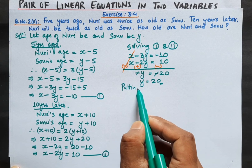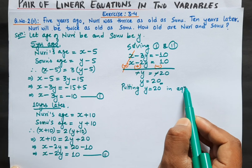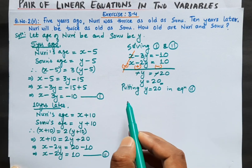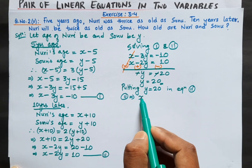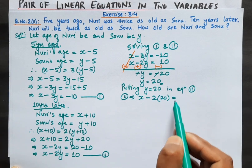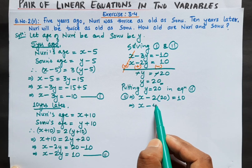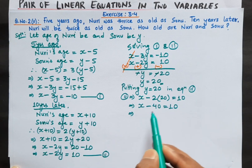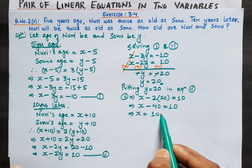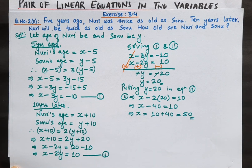Now we have y equals 20. We put this value into equation number 2. From equation 2: x minus 2 times 20 equals 10, so x minus 40 equals 10. Transposing 40 to the right-hand side: x equals 10 plus 40, which gives x equals 50.